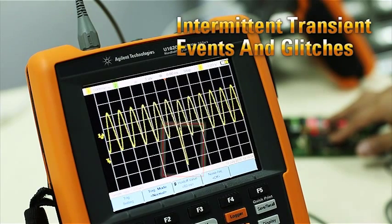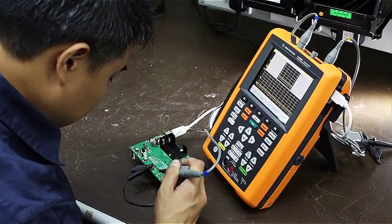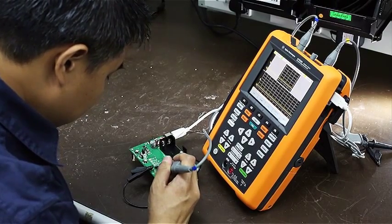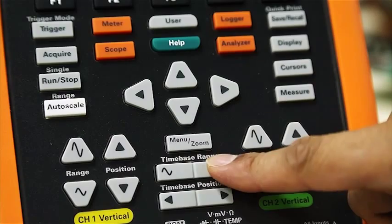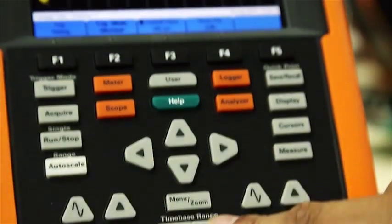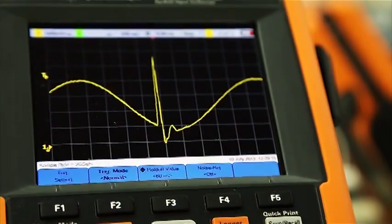Intermittent transient events and glitches are among the greatest challenges in electronic circuitry troubleshooting. To capture glitches, you would need high sampling rate for better resolution to see intermittent events.